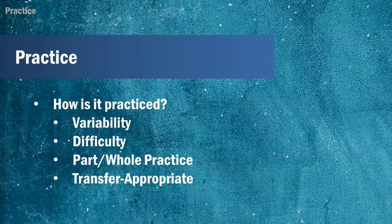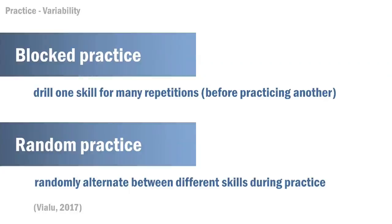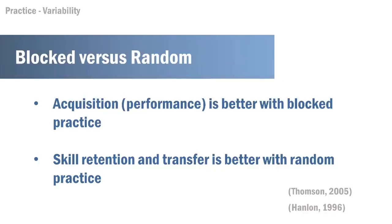That brings us to how the practice occurs. Variability is very important for retention and learning. Variability can be a matter of task variation as well as context or environment. Constant practice is when the parameters are essentially unchanged — for example, taking steps on a treadmill. Variable practice means there are different parameters within one practice session. This might be blocked practice, where we drill one skill over and over before moving on, or random practice, where we intersperse a number of different skills randomly within the same session. Acquisition is better with blocked practice, but skill retention and transfer is better with random practice.